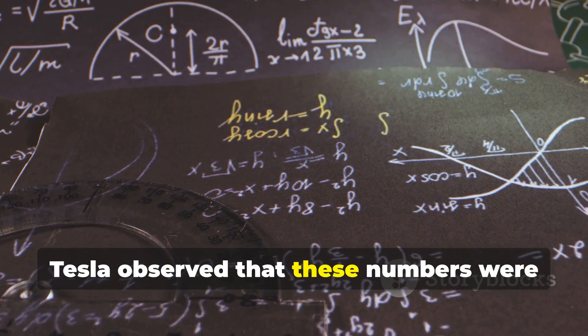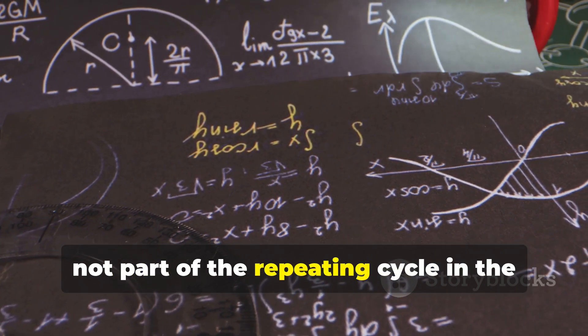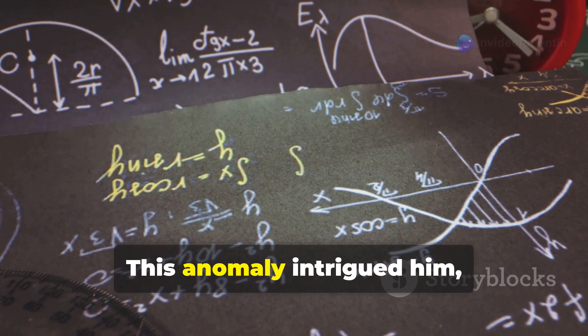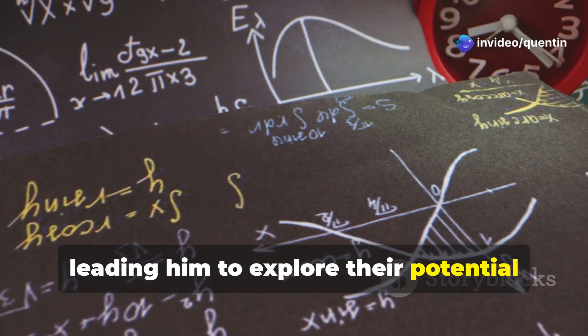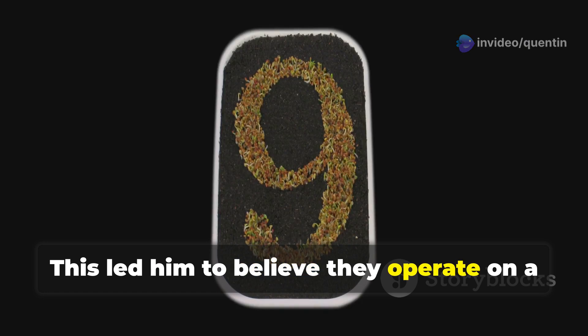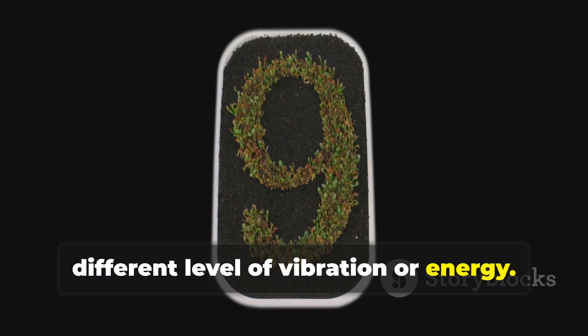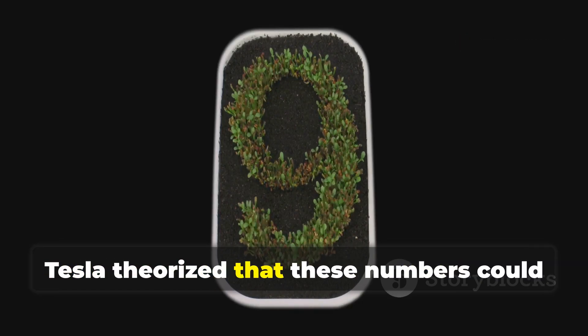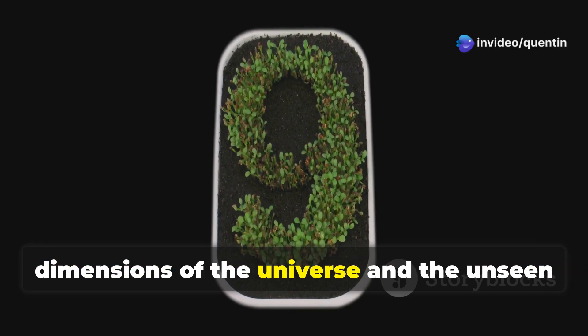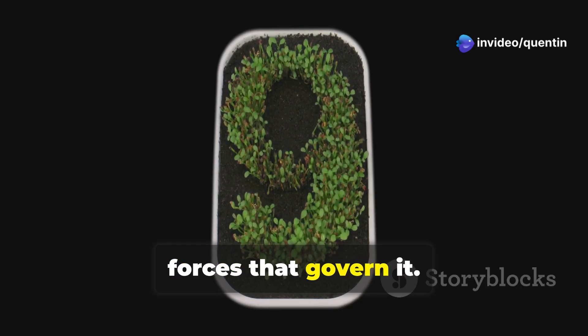Tesla observed that these numbers were not part of the repeating cycle in the digital roots of doubling numbers. This anomaly intrigued him, leading him to explore their potential significance in greater depth. This led him to believe they operate on a different level of vibration or energy. Tesla theorized that these numbers could be the key to understanding the hidden dimensions of the universe and the unseen forces that govern it.